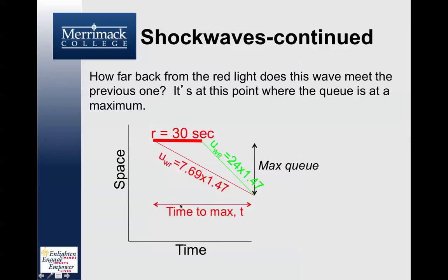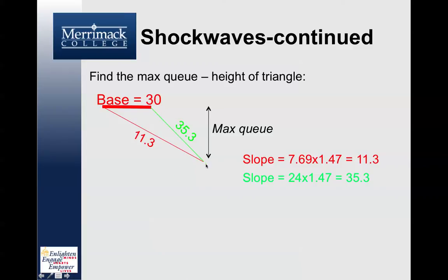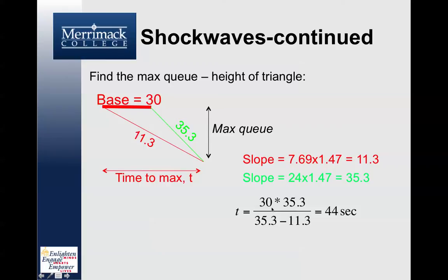To find the maximum queue, we solve the geometry of the space-time diagram — essentially a simple triangle. The slope of the formation leg is 11.3 and the slope of the dissipation leg is 35.3. Solving the geometry, the two waves meet at 44 seconds, and the maximum queue length is 44 seconds times the formation wave velocity, giving approximately 499 feet.